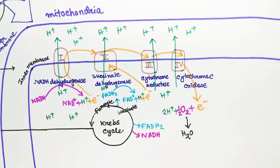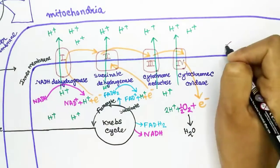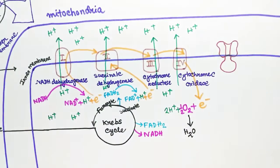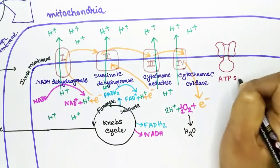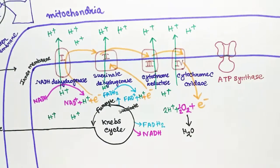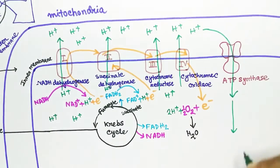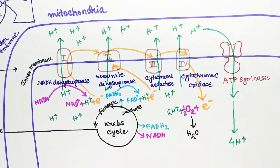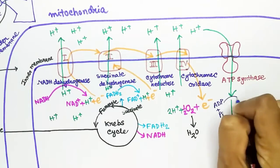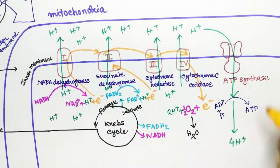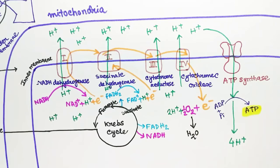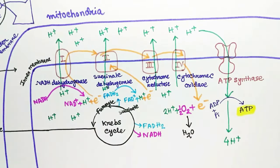This movement occurs through another enzyme called ATP synthase, also called Complex 5. When four hydrogen ions cross through the ATP synthase enzyme, it produces one molecule of ATP. This is how the electron transport chain produces ATP — by passing electrons through the chain of enzymes and using the gradient of hydrogen ions.